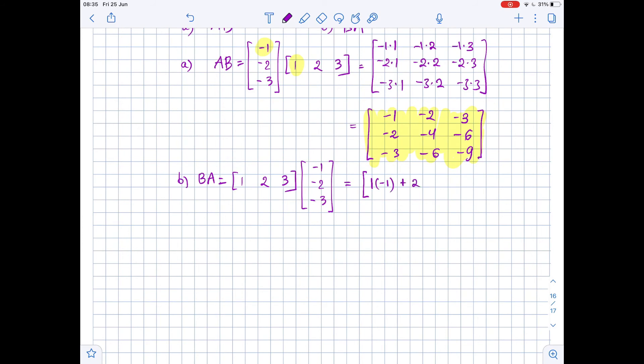So we get 1 times negative 1 plus 2 times negative 2 plus 3 times negative 3. And this equals negative 1 minus 4 minus 9. And this equals negative 14.